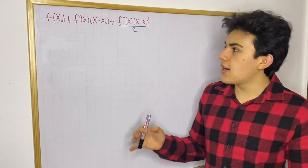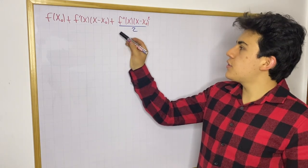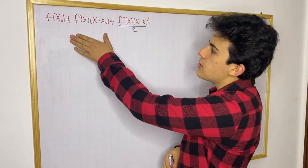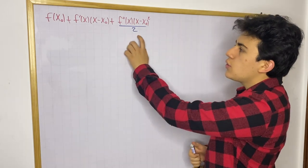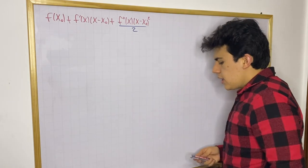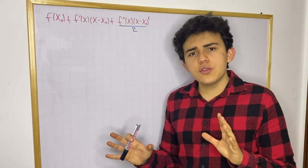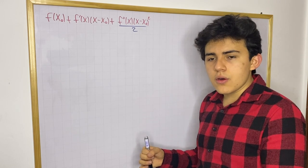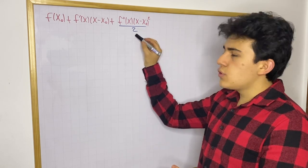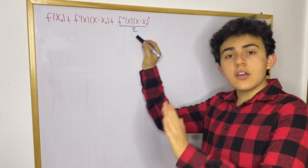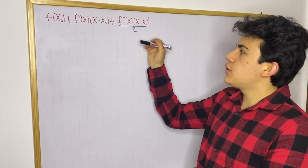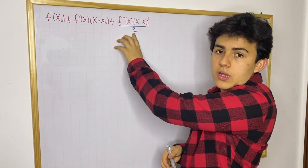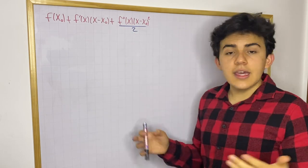Hello everyone! So today I wanted to discuss why we have a coefficient of one half in the third term of the quadratic approximation formula. Up here I have the quadratic approximation formula and I want to show you where this two comes from. This is not going to be a formal proof at all — I just want to give you a bit of intuition into the utility of why it's useful to have this two down here. This is not a derivation, but rather just an example of why this two is very important to have.